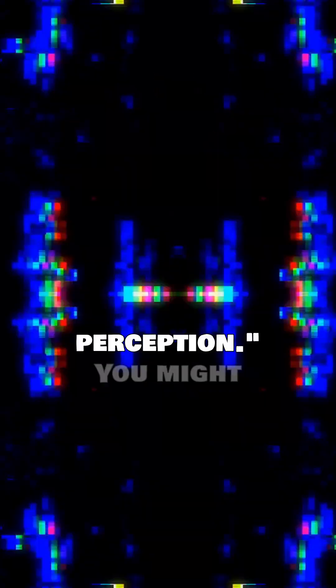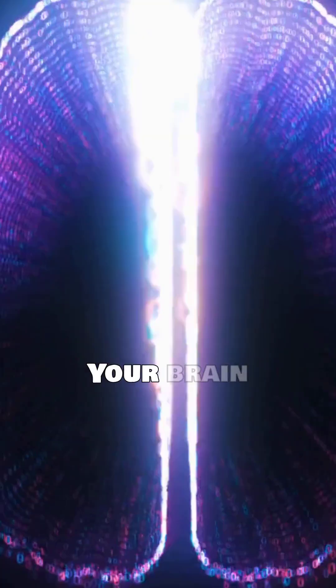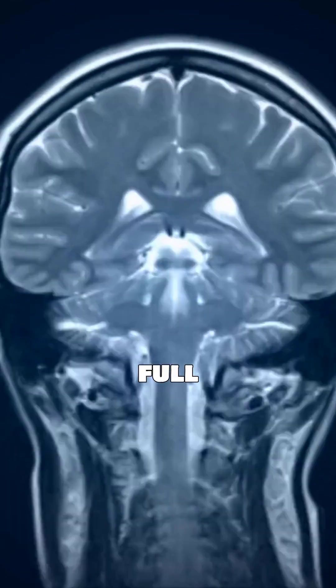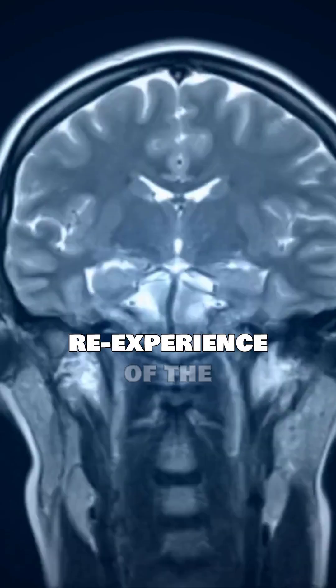Another theory points to split perception. You might briefly glimpse something, then fully perceive it moments later. Your brain interprets the second, full perception as a re-experience of the first.